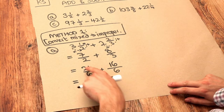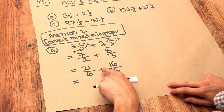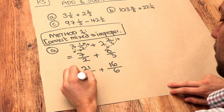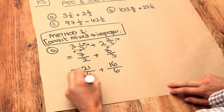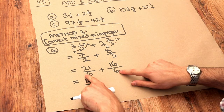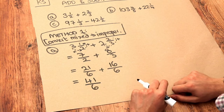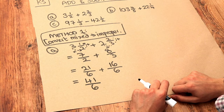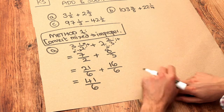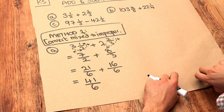That allows us to add these fractions together. So we've got 21 over six plus 16 over six. Remember, if we have the same denominator we can just add the numerators, so that's 41 over six. And we could convert this number back into a mixed number.